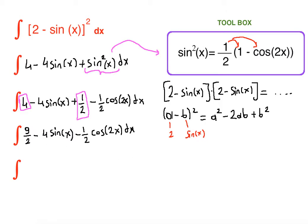What is the antiderivative of 9/2 with respect to x? It is 9/2·x. Minus, we have 4 in front here. What is the antiderivative of sin(x)? Antiderivative of sin(x) is -cos(x).